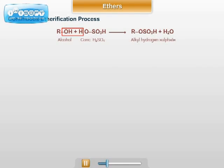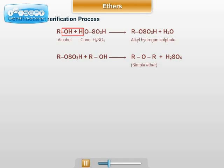The general reaction is: ROH (alcohol) plus HOSO3H (concentrated H2SO4) first forms alkyl hydrogen sulphate. In the second step, alkyl hydrogen sulphate reacts with another molecule of alcohol forming H2SO4 and simple ether. The liberated H2SO4 then continues the process, and hence it is known as the continuous etherification process.